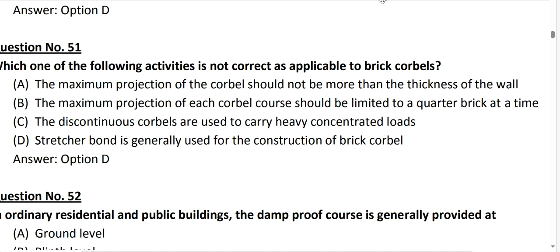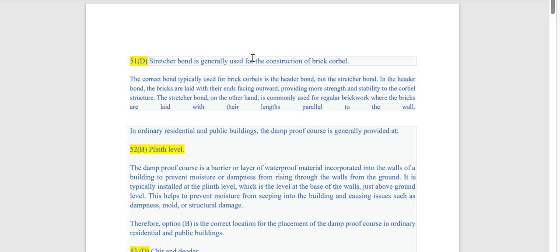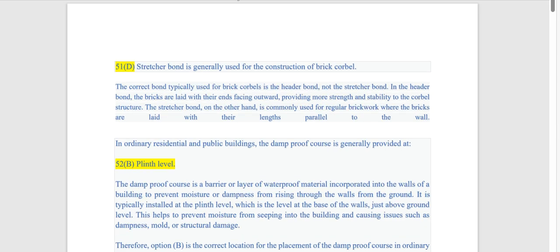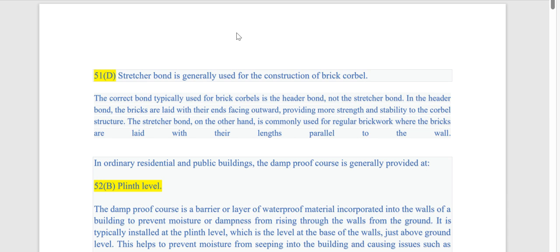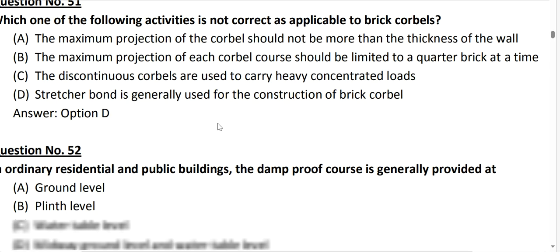Stretcher bond is generally used in the construction of brick corbels. So here we need an explanation. Mainly the header bond is arranged properly. The header bond is typically used for brick corbels, not the stretcher bond, because in the stretcher bond the strength as well as durability is very very less.